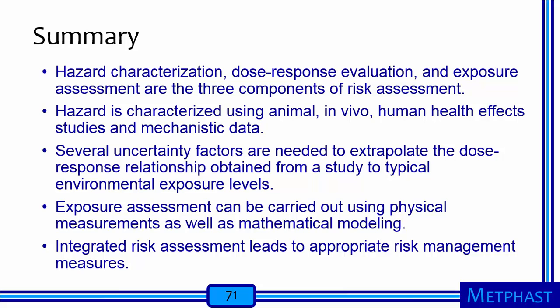To summarize this module: hazard characterization, dose response evaluation, and exposure assessment are the three components of risk assessment. Hazard is characterized using animal, in vivo, and human health effects studies, and mechanistic data. Several uncertainty factors are needed to extrapolate the dose-response relationship obtained from a study to typical environmental exposure levels encountered by human beings. Exposure assessment can be carried out using physical measurements as well as mathematical modeling. And finally, integrated risk assessment leads to appropriate risk management measures.